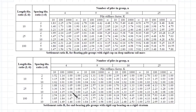First you determine the number of piles in the group, and then the pile stiffness factor K. You then determine the length to diameter ratio, and the spacing to diameter ratio. From these values you can get a value for RS.